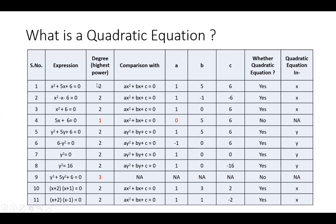So we will find a, b, and c values by comparing with ax² + bx + c = 0. A value is 1, b value is 5, and c value is 6. Therefore it is a quadratic equation.